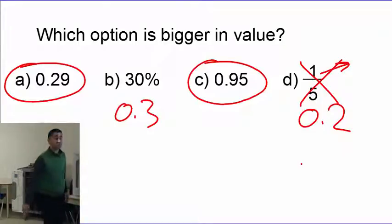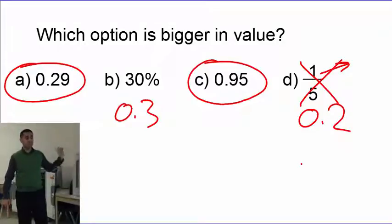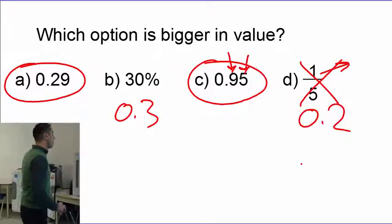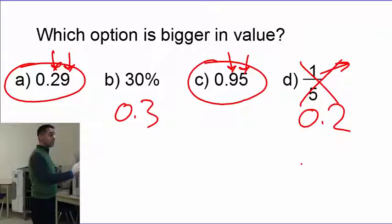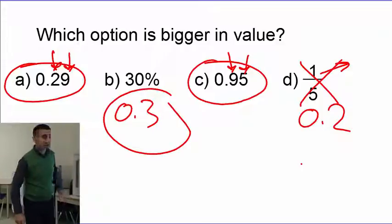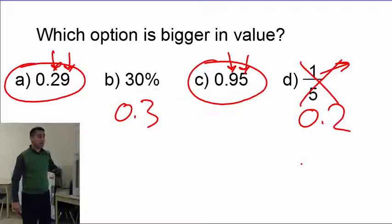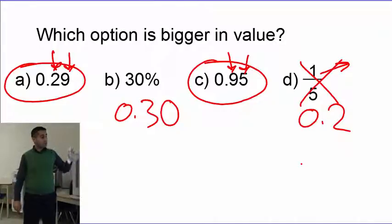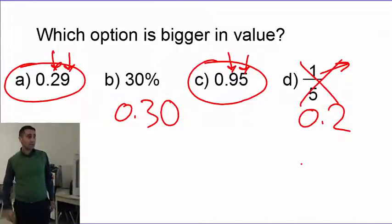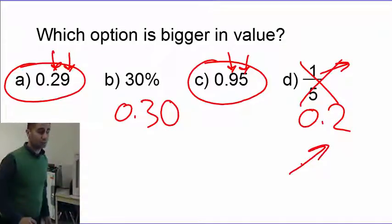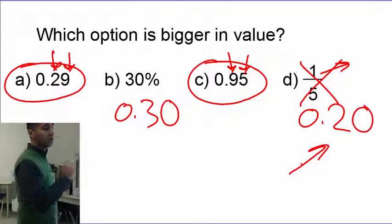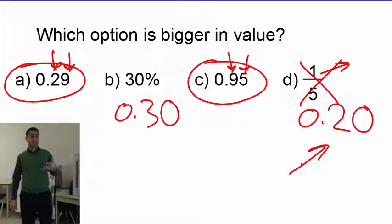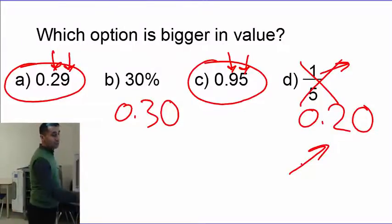Now the next thing you want to do is make sure you have the same number of digits for each option. Here I have two digits, here I have two digits, here I only have one digit. I want to make this two digits — I do that by adding a zero at the end. So now this is still 1.3 but in two-digit format. Adding zero here makes it two digits — it's still 0.2, but it now has two digits. Now I can compare better.